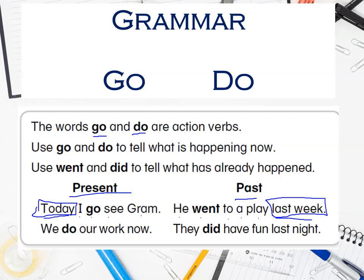Let's see more examples. 'We do our work now.' I know this sentence is in present, so I have to put the verb 'do,' not 'did,' because I have the word 'now,' and 'now' tells us something happening in the present. In the past we say: 'They did have fun last night.' The words 'last night' tell me this happened in the past, so 'did' is correct.